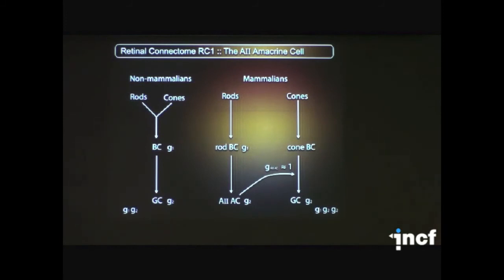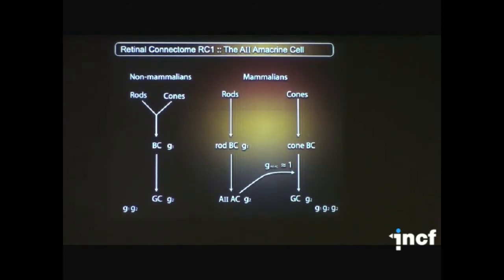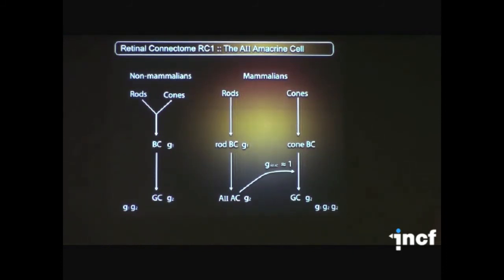So a quick summary on the A2 amacrine cell, why it's so interesting. All non-mammalians use a two-tier pathway to get rod signals out of the retina. So rods drive bipolar cells, there's a gain term at that synapse, and then they drive ganglion cells, there's a gain term at that synapse for a network gain of G1, G2.